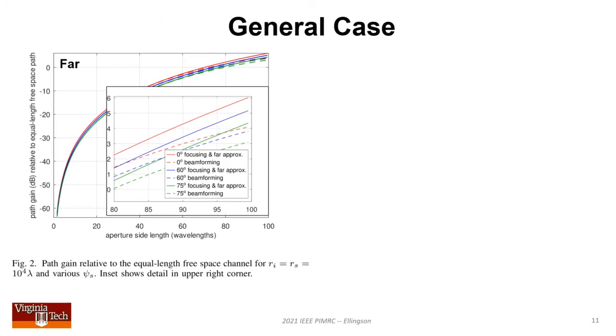Now some results. Results are shown as path gain, reciprocal path loss, relative to equal length free space channel. 0 dB means path loss equal to free space, or alternatively a surface preserving wavefront curvature. Results are shown as a function of aperture size along the horizontal axis. Curves trend upward. Separate curves shown for far case approximation, for focusing exactly, and for beamforming. Separate curves for various incident and scattering directions. In all cases, distances to transmitter and receiver are equal.